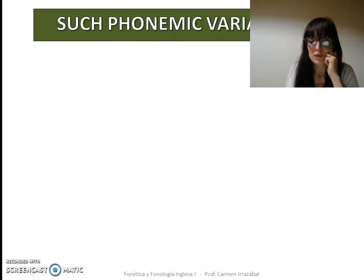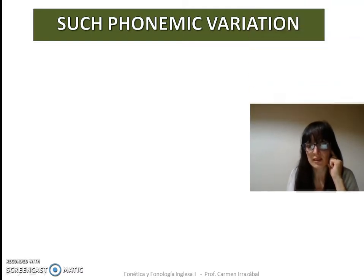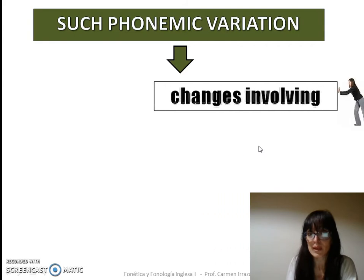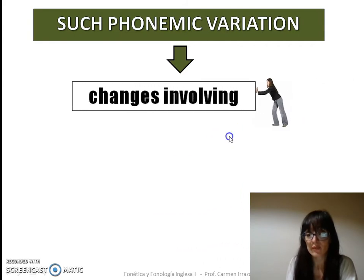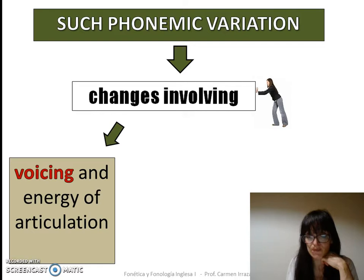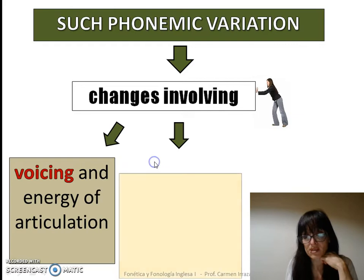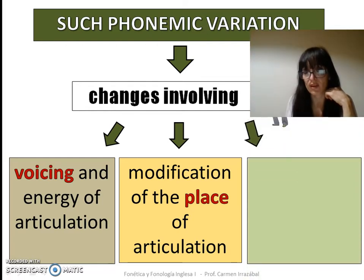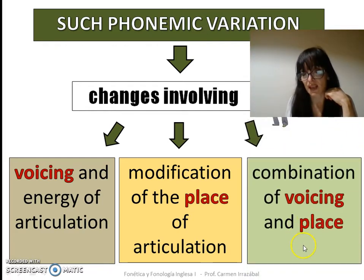So, which kinds of variations can we see? This phonemic variation may involve changes in the vocal fold activity of sounds or in their place of articulation, or maybe both — a combination of both: voicing and place.